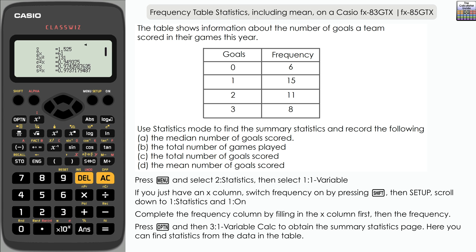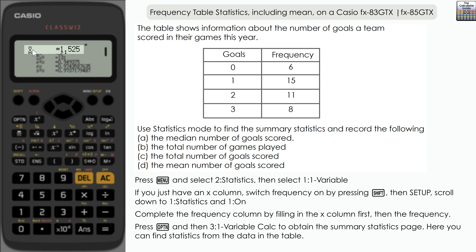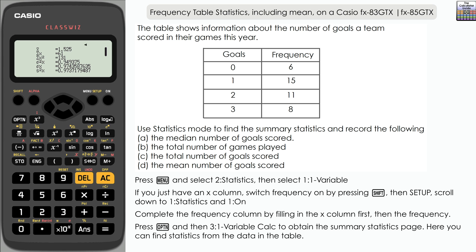Lastly we want the mean number of goals. That would be 61, the total number of goals, divided by n the number of games which was 40. However, the calculator has calculated that for us - it is the top value here represented by x with a line across the top, that is x bar which represents the mean, and in this case it's 1.525.